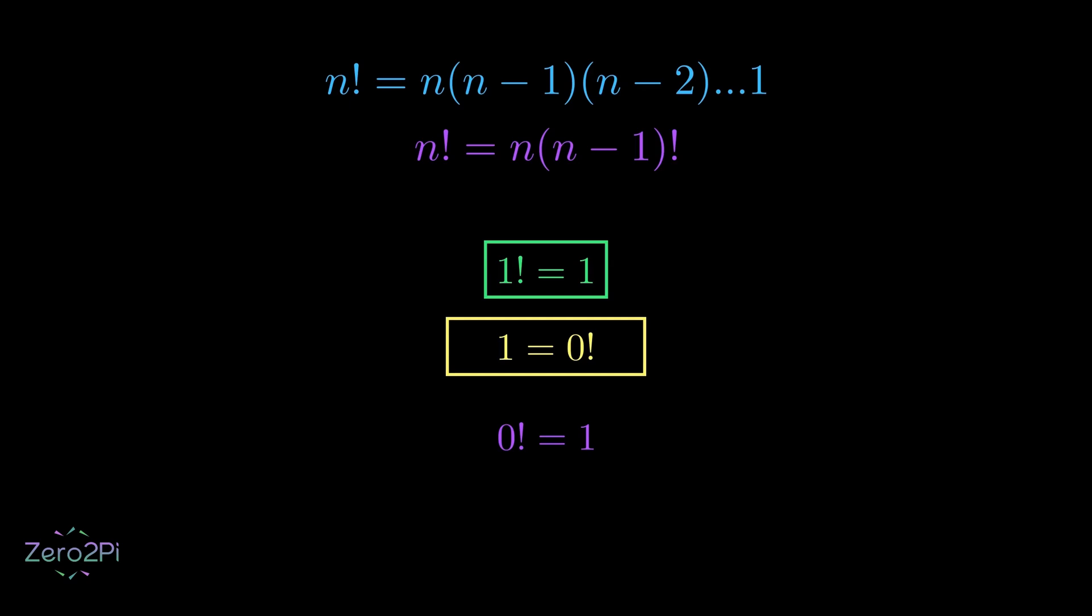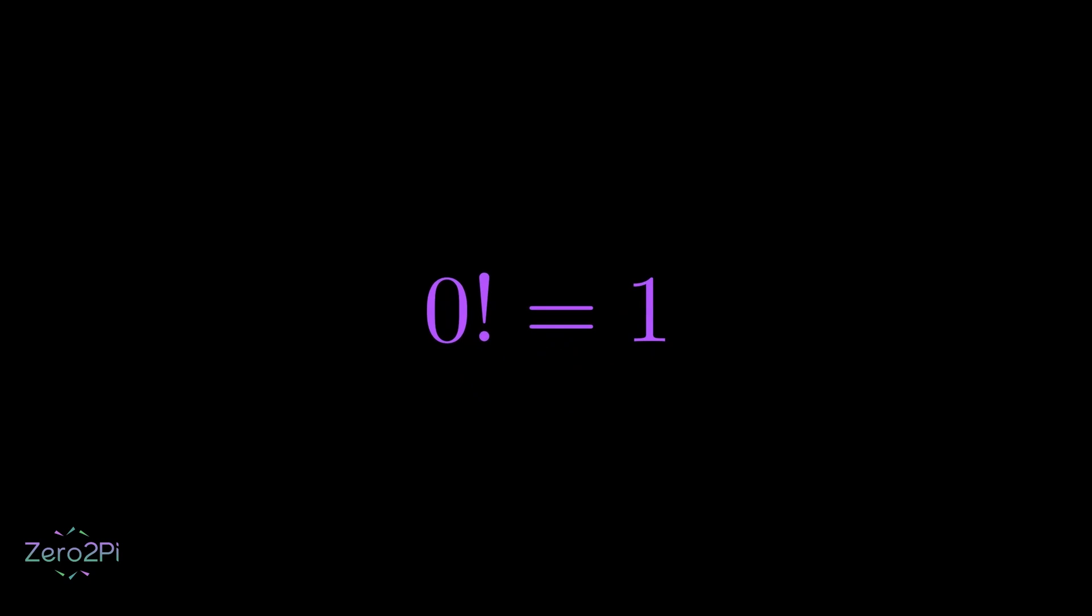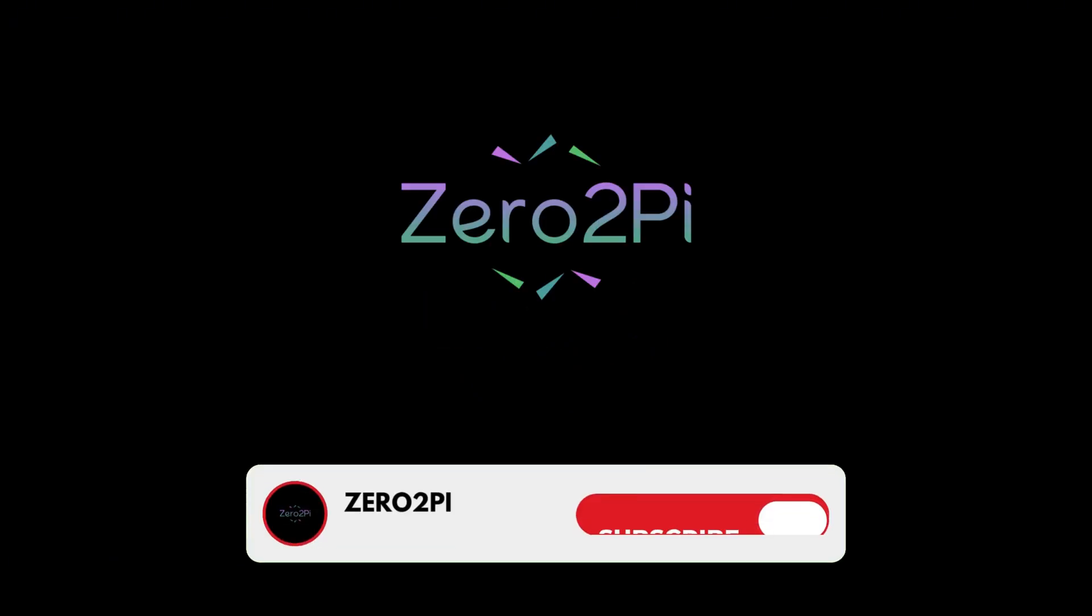So, whichever way you approach it, logically or mathematically, the value of 0 factorial is, in fact, 1. Subscribe to this channel so we can create more content like this.